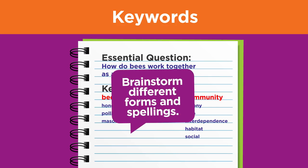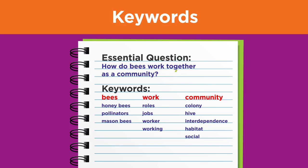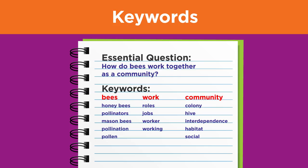Next, brainstorm different forms and spellings of your main idea words. For example, different forms of work would be worker and working, while different forms of pollinators would be pollination and pollen. An example of different spellings for honeybees could be as a single word or as a hyphenated word.